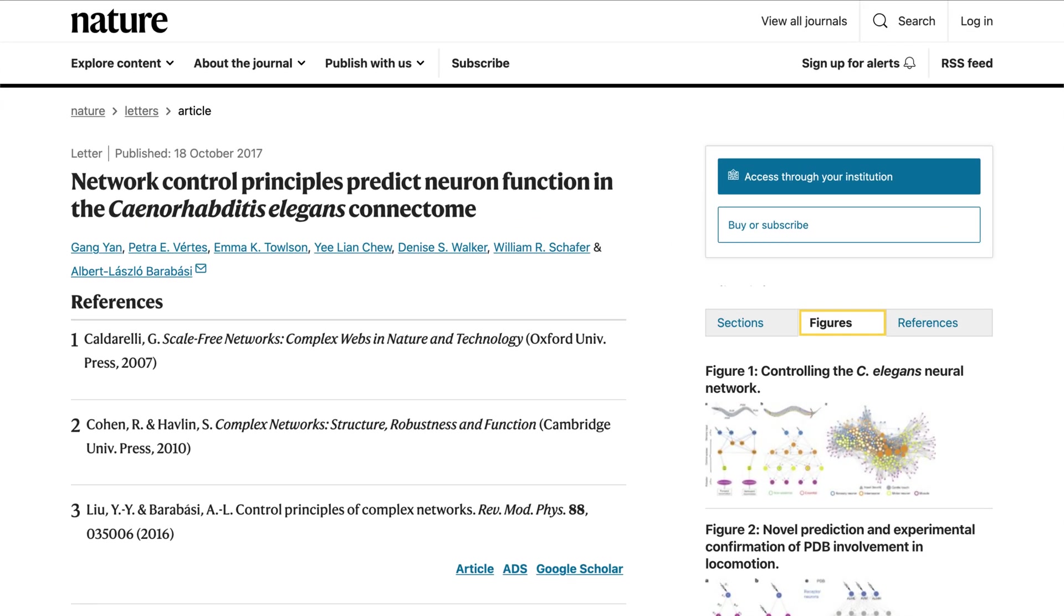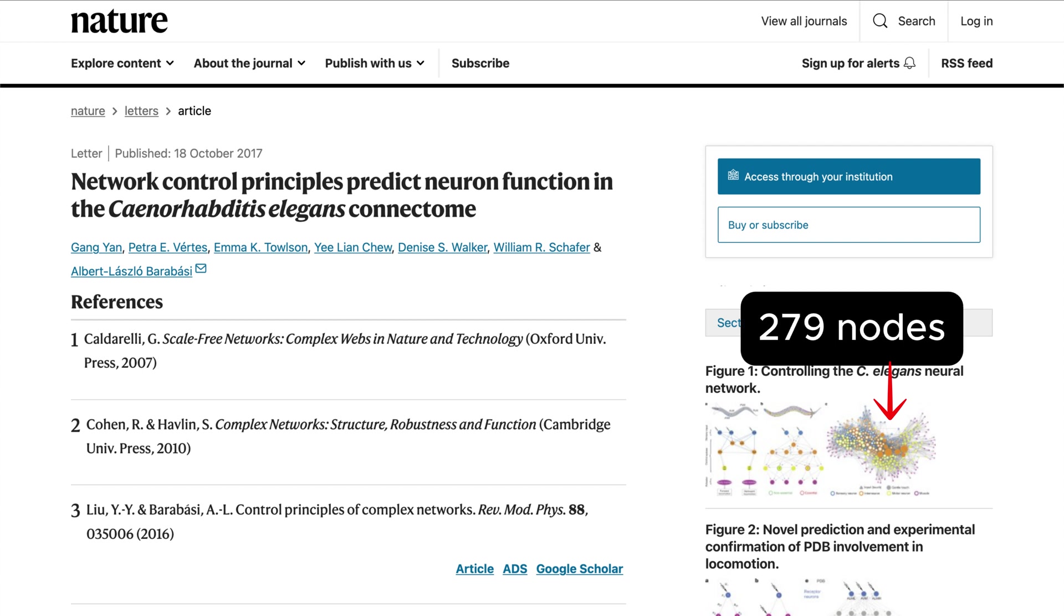For decades, scientists have studied the C. elegans neural network, which in neuroscience is referred to as the connectome, a fully mapped nervous system with 279 neurons connected by 2,194 directed synaptic connections. Caenorhabditis elegans provides an ideal model for studying the dynamics of neural networks with its simplicity and detailed connectome.